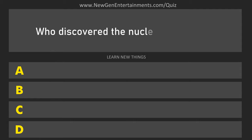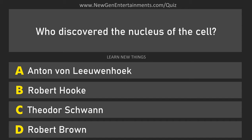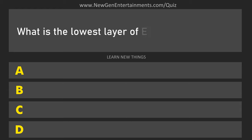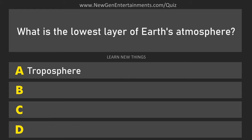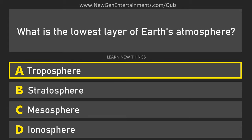Who discovered the nucleus of the cell? Robert Brown. What is the lowest layer of earth's atmosphere? Troposphere.